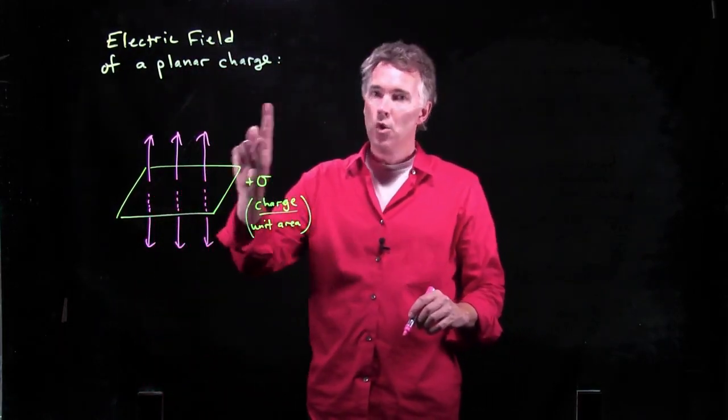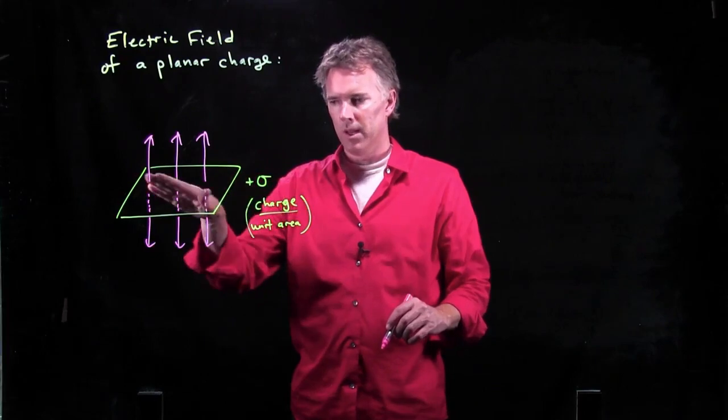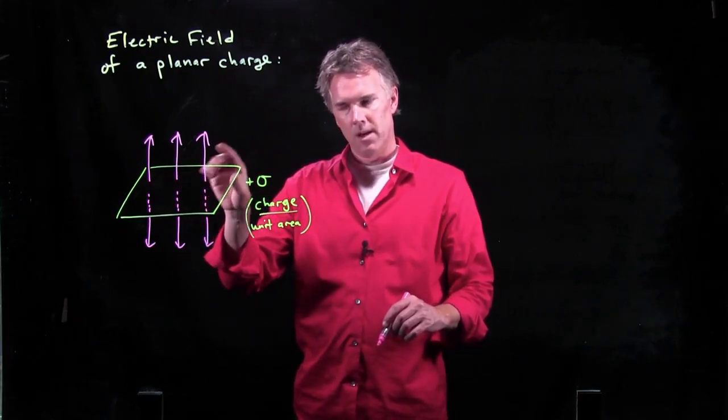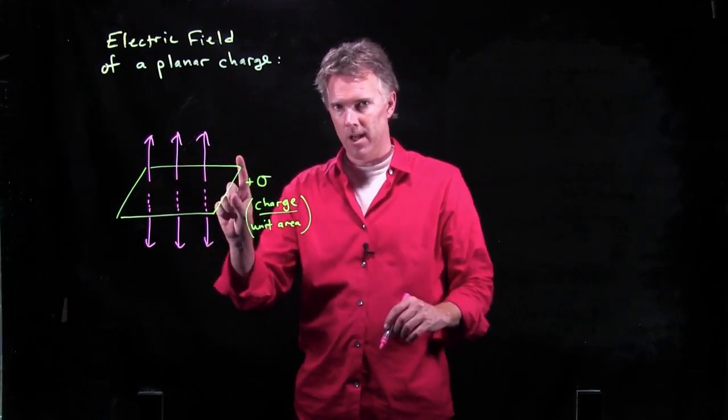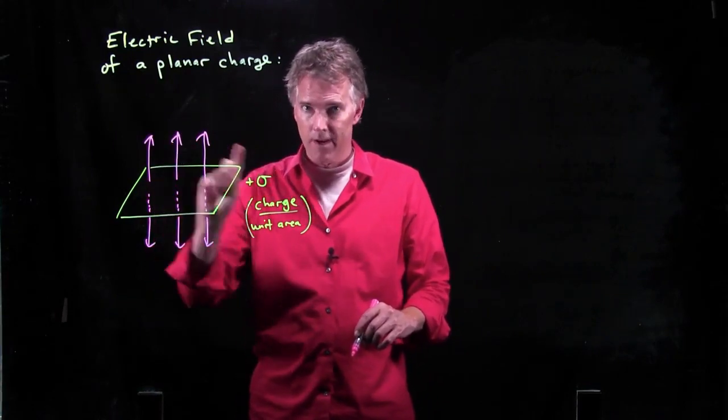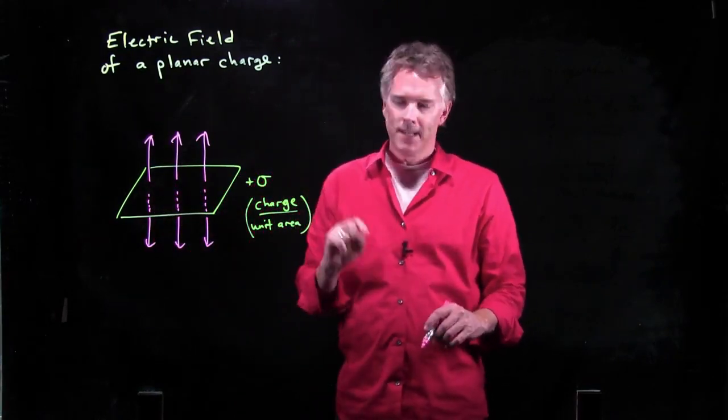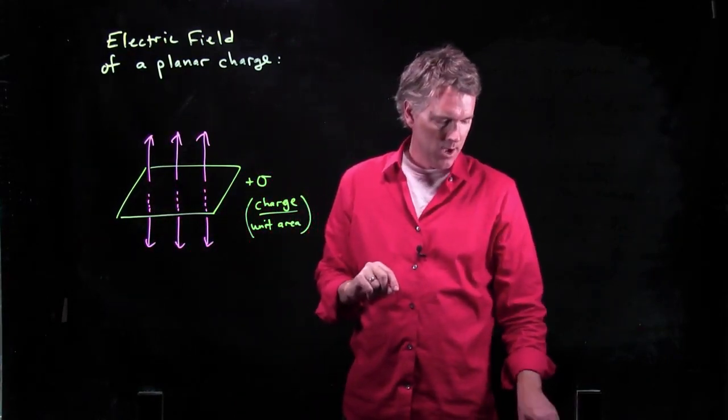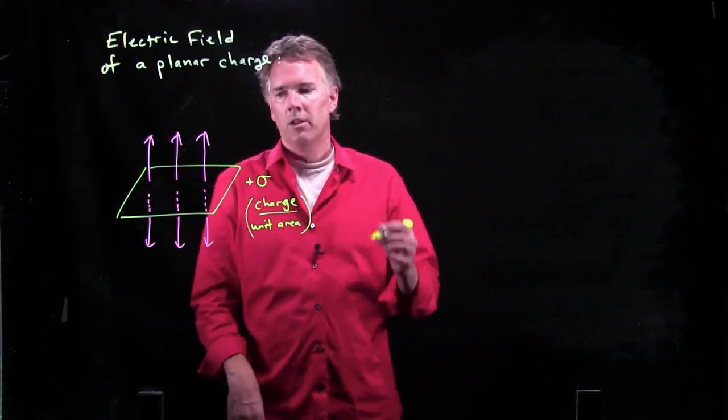Those things always point normal to the plane, right? Now another way to think about that is parallel to the area vector of that plane. And we're going to take advantage of that when we draw our Gaussian surface.